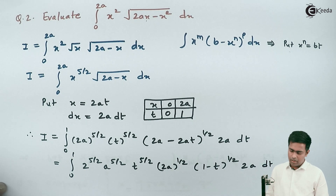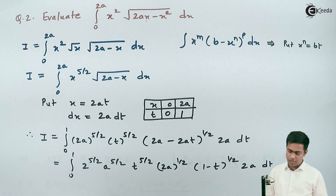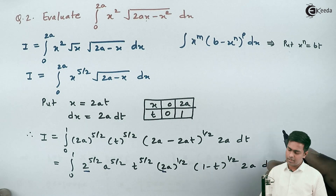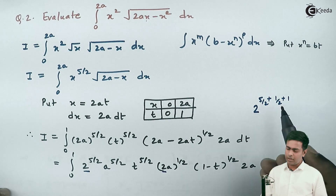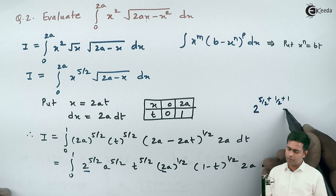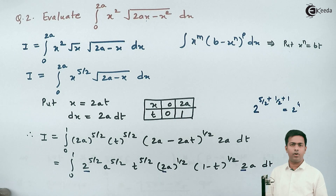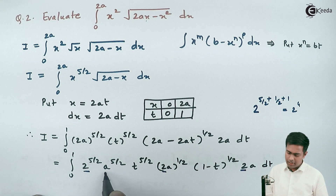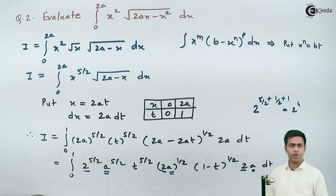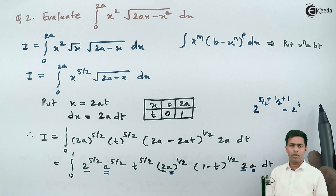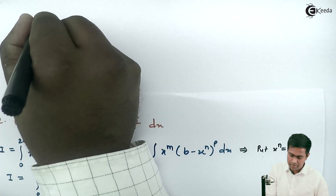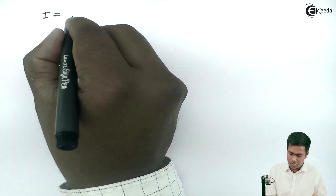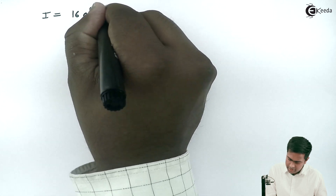Now collecting the powers of 2: 2 raised to 5/2 plus 1/2 plus 1 equals 2 raised to 6/2 plus 1, which is 2 raised to 3 plus 1, equals 2 raised to 4. Similarly, collecting powers of a: a raised to 5/2 times a raised to 1/2 times a gives a raised to 4. So we get 2 raised to 4 times a raised to 4, which is 16a raised to 4, and I can take it outside the integration.